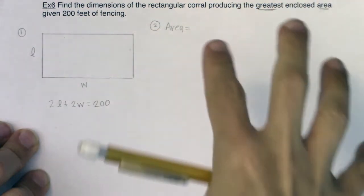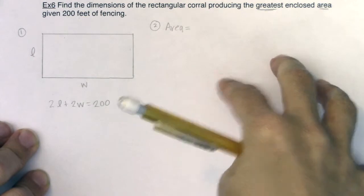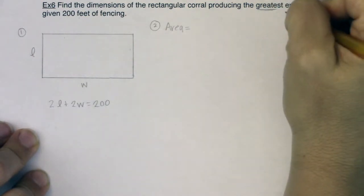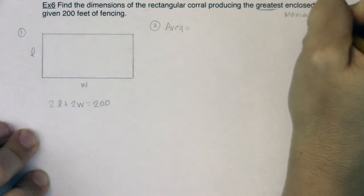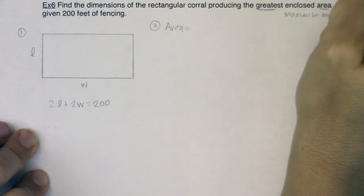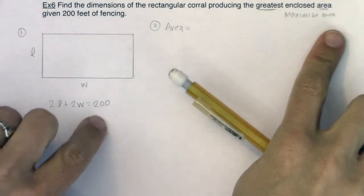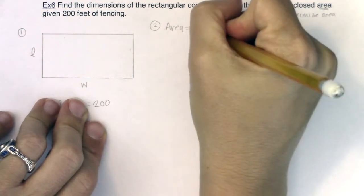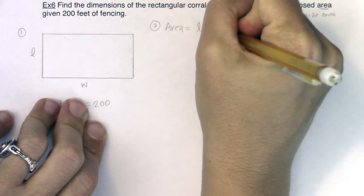Whatever you want to find the maximum or minimum of, in this case, I would like to maximize area. If I want to maximize the area, I need a formula for the area. Well, in the context of a rectangle, that's length times width.